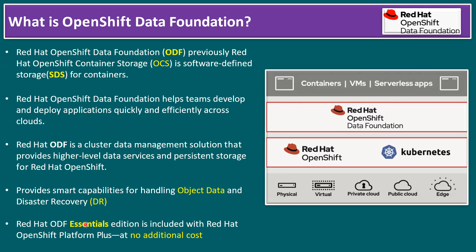ODF has two editions: Essential and Advanced Edition. When it comes to the Essential Edition, it is included with Red Hat OpenShift Platform Plus, in short form OPP, at no additional cost. OPP means OpenShift Platform Plus.